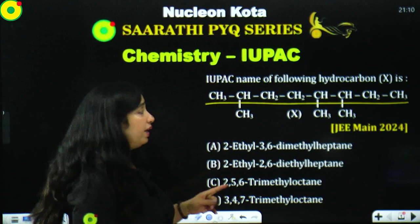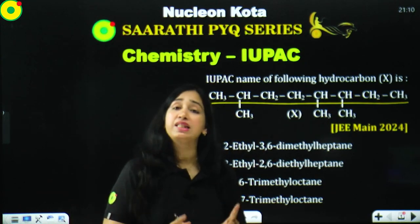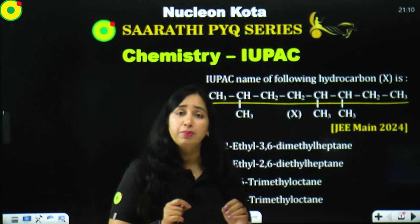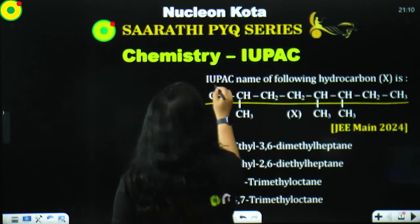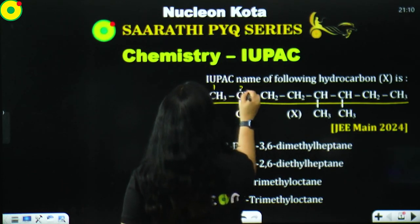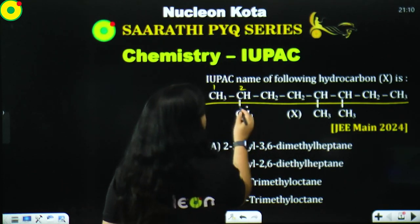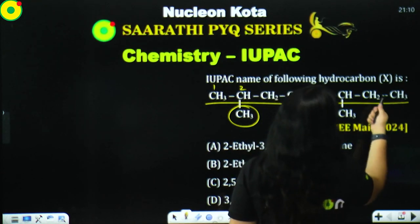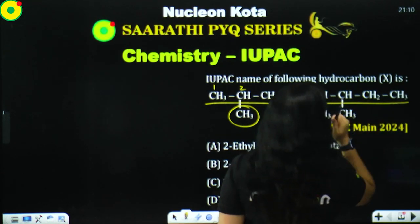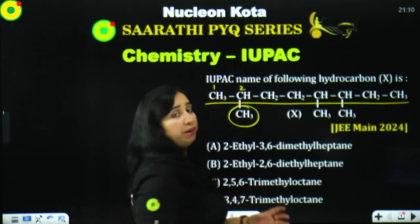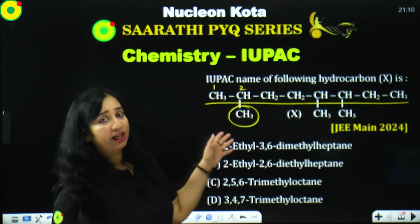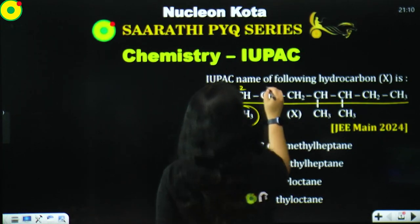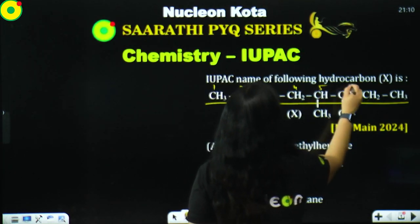So, the numbering always starts from the end where the first substituent gets the lowest possible number. On the left side, the first substituent is at position 2. When you number from the right side, the first substituent is at position 3. So, we number from the left side, so that the first substituent gets the lowest possible position number.